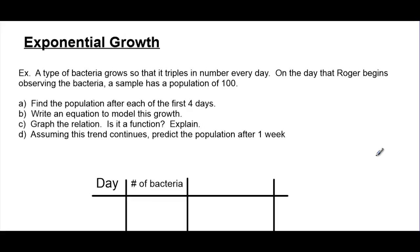We want to figure out what is the population after each of the first four days. Then, from that information, try to come up with an equation that can model this growth. We'll then try to graph it and discover whether or not this relationship is a function or not. And then, assuming that this trend continues, can we use our model to predict what the population will be after one full week of watching the bacteria grow?